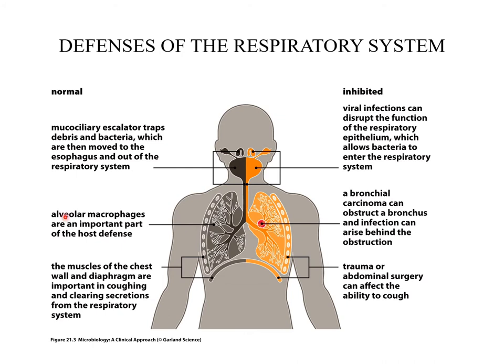The mucociliary escalator traps debris and bacteria and removes them from the respiratory system. Alveolar macrophages and chest wall muscles and diaphragm can generate cough to clear secretions. These defense mechanisms may be inhibited by viral infection, which disrupts respiratory epithelium function and can lead to death of cilia. As a result, mucociliary escalator function is lost but is compensated for by coughing. It typically takes 6 to 12 weeks for the mucociliary escalator to return to fully functional status after infection.